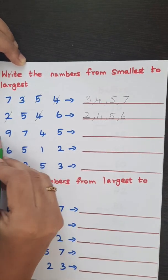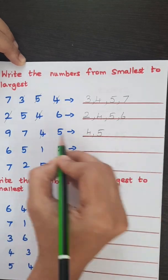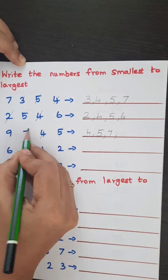Here the smallest number is 4, then comes 5, 9, and 7. 7 is the smallest number and next comes 9.